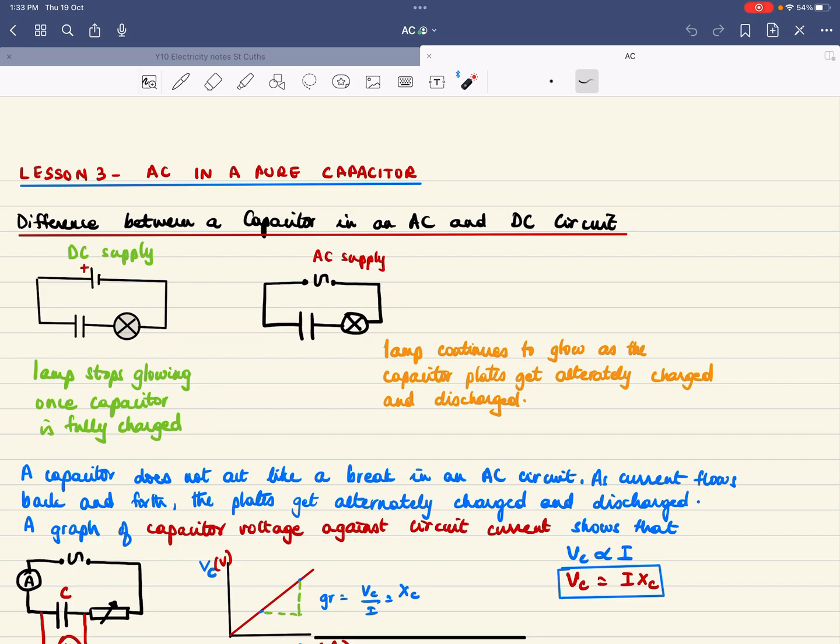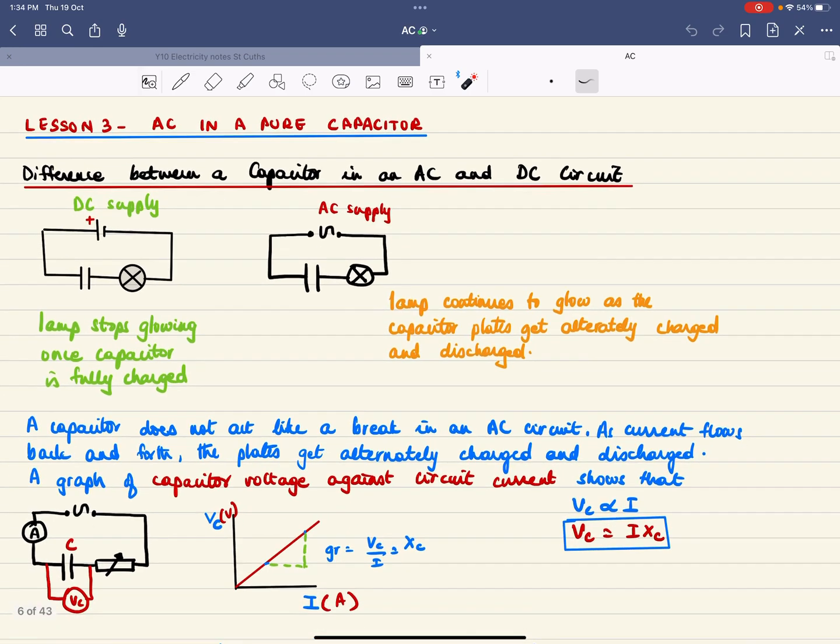However, in an AC circuit, the lamp does not act like a brake in the circuit and will continue to glow. The reason is because the capacitor plates are alternately getting charged and discharged as the electrons go back and forth.